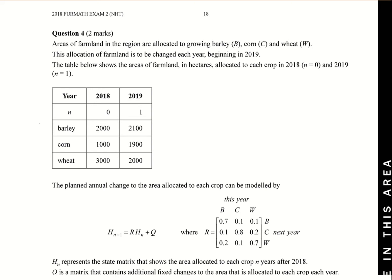It's changed every year beginning in 2019. This table here shows the areas of farmland in hectares allocated to each crop in 2018, so that's what we call n equals zero. 2019 is n equals one.